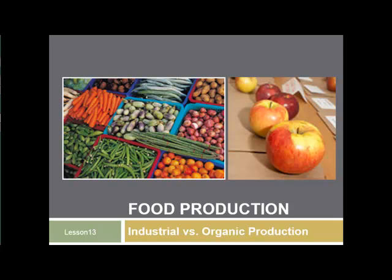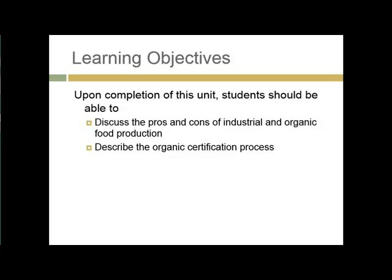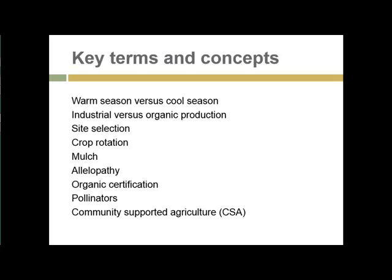This material continues next week with a discussion on sustainability. The assignment covers Lessons 13 and 14 and is due at the end of Lesson 14. I apologize for the superficial coverage of these topics, but you can dig in based on your interests and how much time you have. On completion of this unit, you should be able to discuss the pros and cons of industrial and organic food production and describe the organic certification process. There's actually a pretty good chapter on organic food production in the AQUA textbook. Some of the key terms and concepts are listed here and we'll get into them as we go through the material.